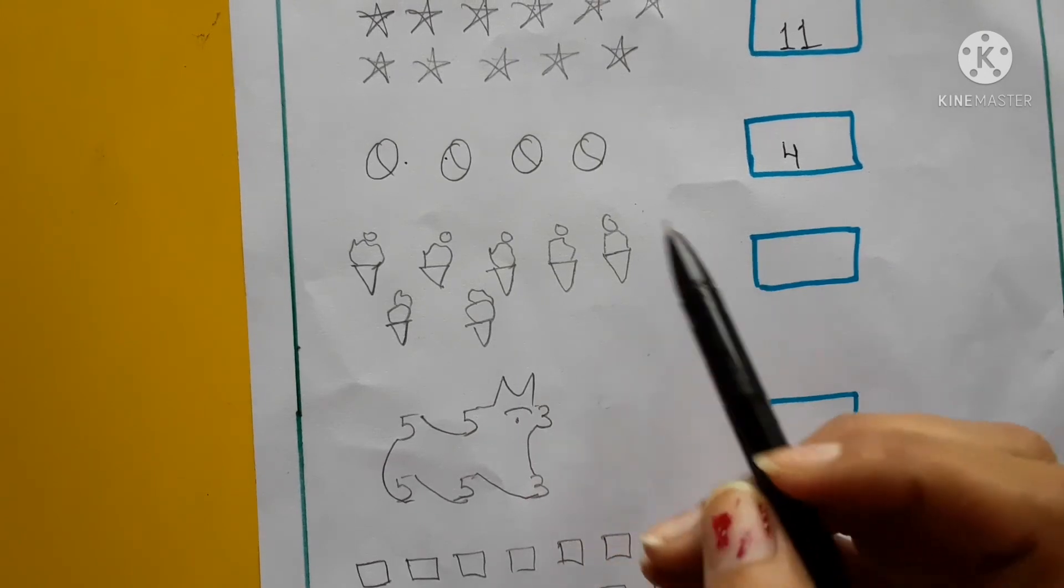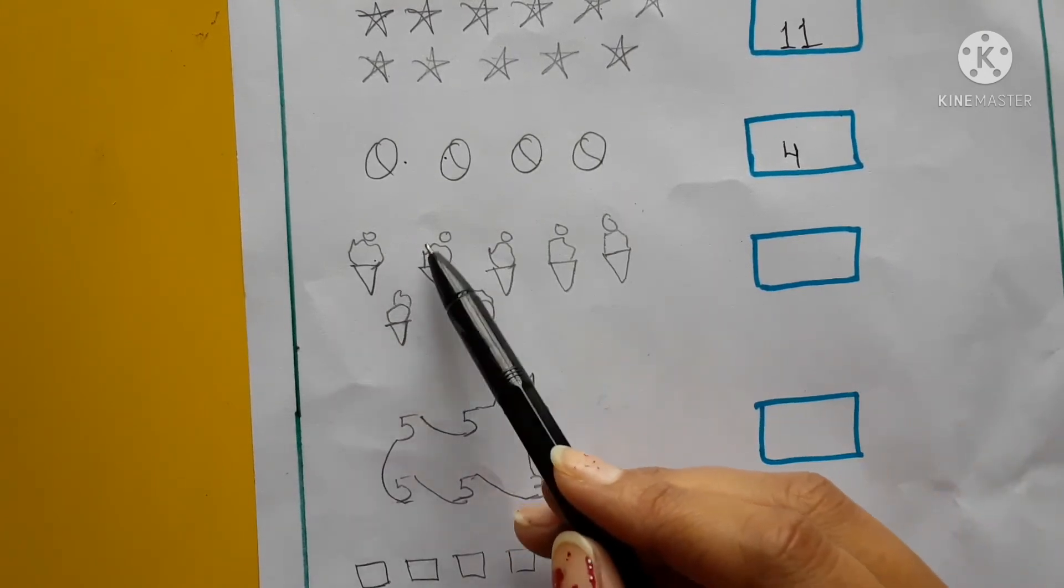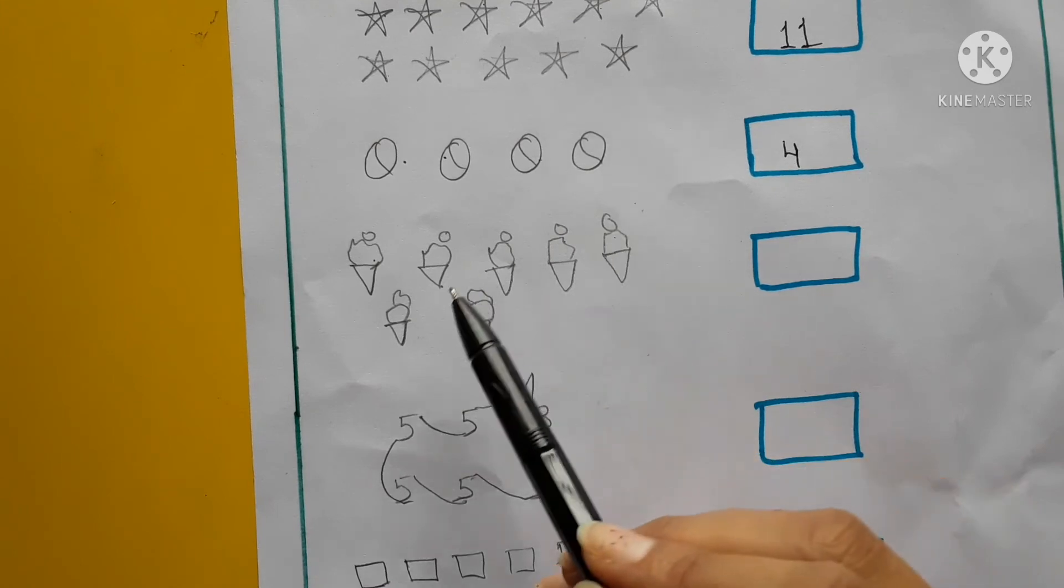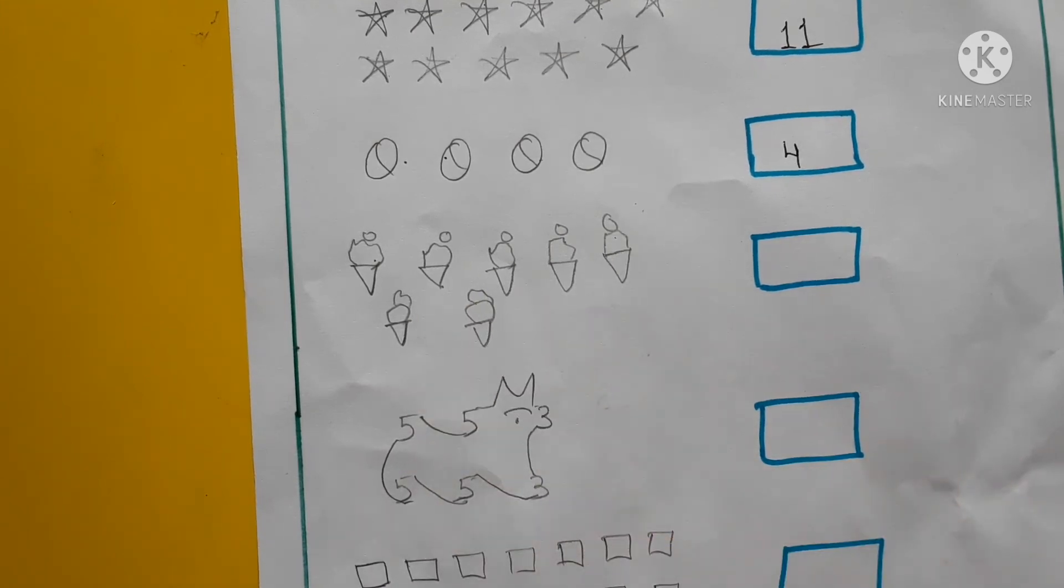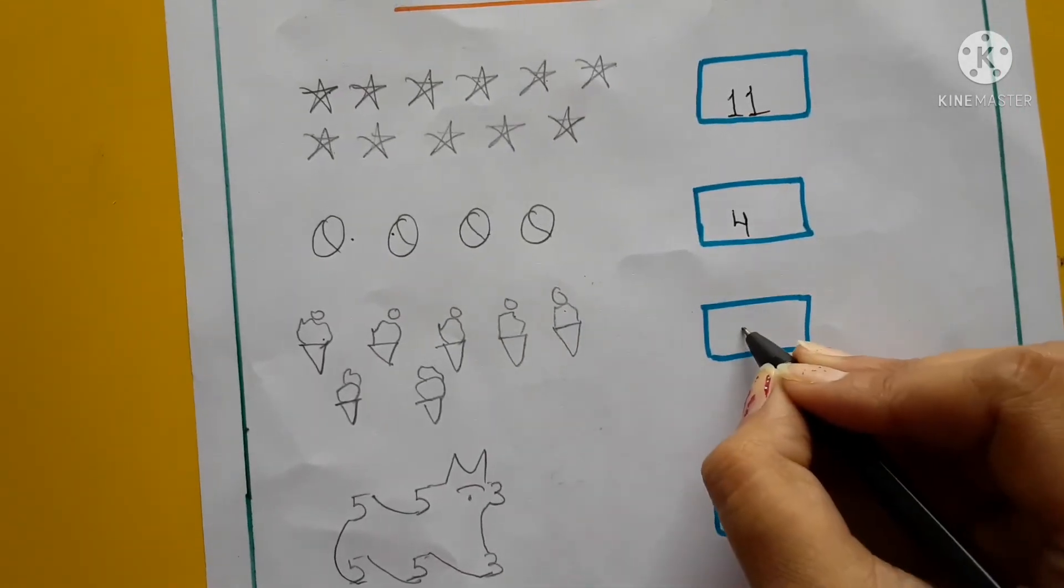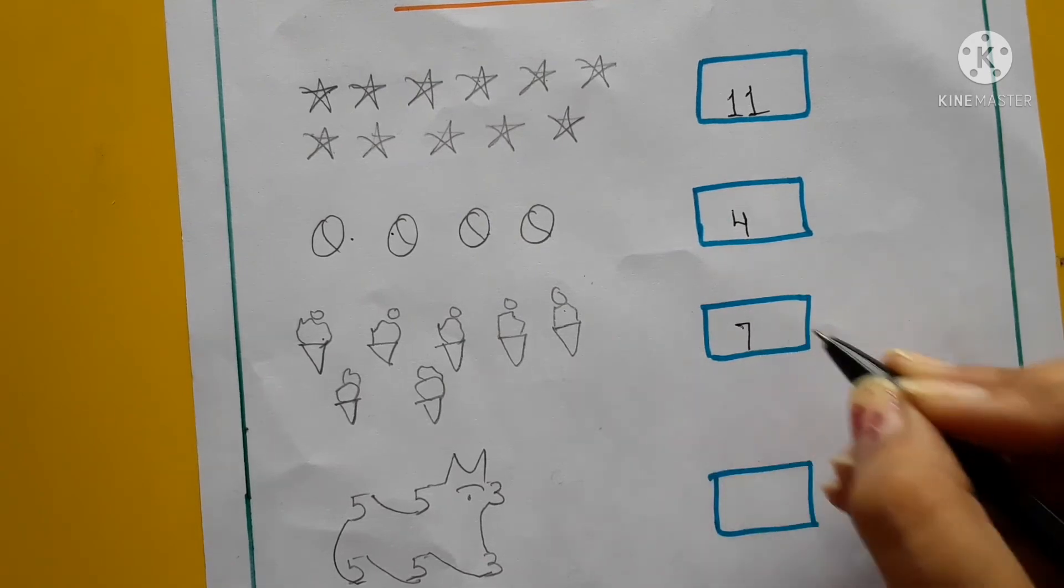Next, ice cream kitne hai? Count karna hai. 1, 2, 3, 4, 5, 6, 7. Kitne ice cream hai yeh? 7. Toh hum yaha pe 7 mention karna hai. Okay?